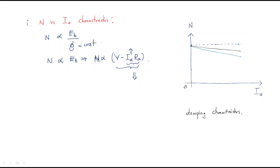Due to the IaRa drop, the speed will slightly decrease up to the rated point. This drop causes a small reduction in speed from the ideal constant value.